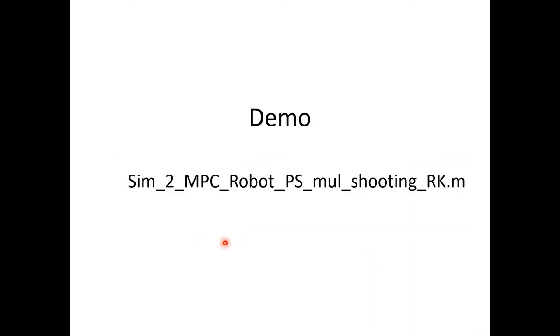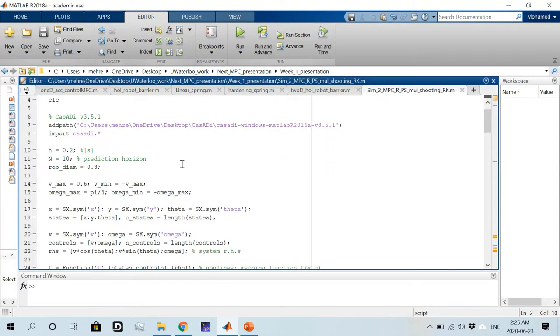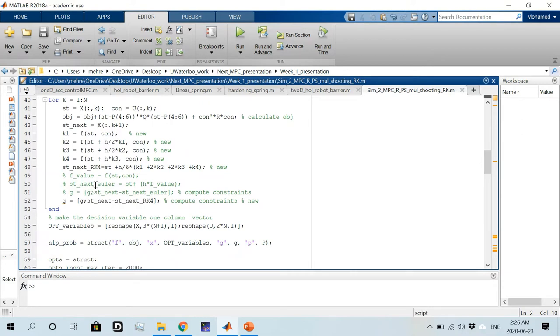All right, so let's now look at the integration of this method with our MPC controller. I'm going to modify the point stabilization and multiple shooting file and use the RK4 method for integrating the system instead of the Euler method. Here we have the file for the point stabilization and the multiple shooting implementation. We will go directly to where we integrate our system and comment out the Euler method part, which are the three lines here. We will then write the expressions for k₁ to k₄ using the same equations we presented in the slides. Finally, we write the next state expression as a function of the current state and the weighted average of the slopes multiplied by the sampling time h.